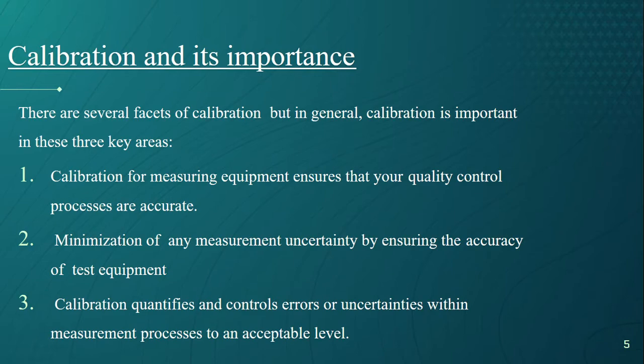Number one, calibration for measuring equipment ensures that your quality controlled processes are accurate. Number two, minimization of any measurement uncertainty by ensuring the accuracy of test equipment. Number three, calibration quantifies and controls error or uncertainties within measurement processes to an acceptable level.